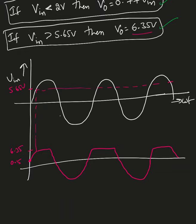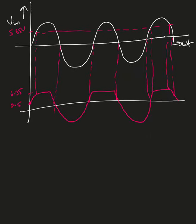The output value at V_n = 0 must be marked at 0.7 volts on the waveform. It's a good idea to draw a dotted line so you can see exactly where the output is clipped.